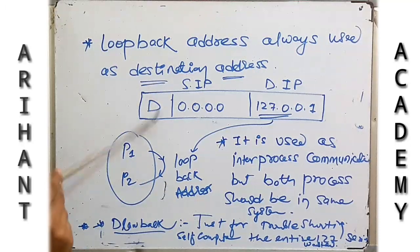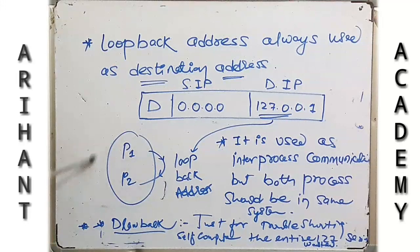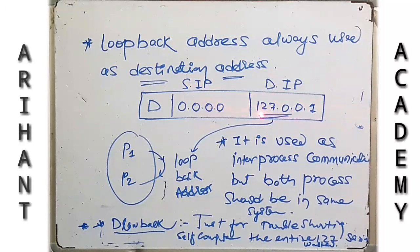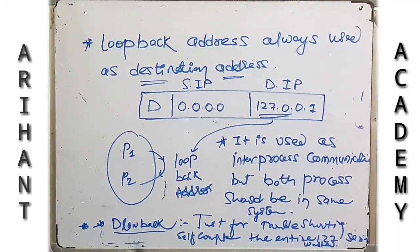Now, what is the drawback of this loopback address? To just check a single system is connected to the whole network or not, your complete 127 series — all IP addresses from 127.0.0.1 to 127.255.255.255 — is wasted. The complete 127 series is wasted only to check whether a system is connected to a given network or not. This is the loopback address concept under the PING command.